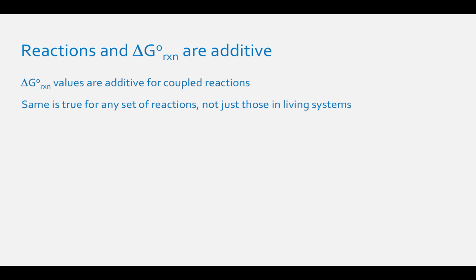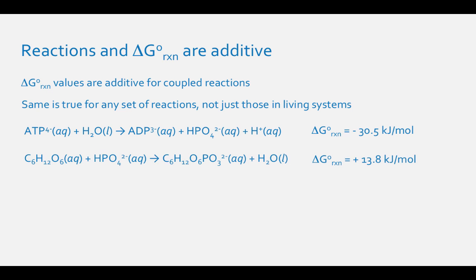For the first two steps of glycolysis, ATP-4- aqueous plus H2O liquid results in ADP-3- aqueous plus HPO42- aqueous. Delta-G-0 reaction equals negative 30.5 kilojoules per mole. C6H12O6 aqueous plus HPO42- aqueous results in C6H12O6PO32- aqueous plus H2O liquid. Delta-G-0 reaction equals 13.8 kilojoules per mole.